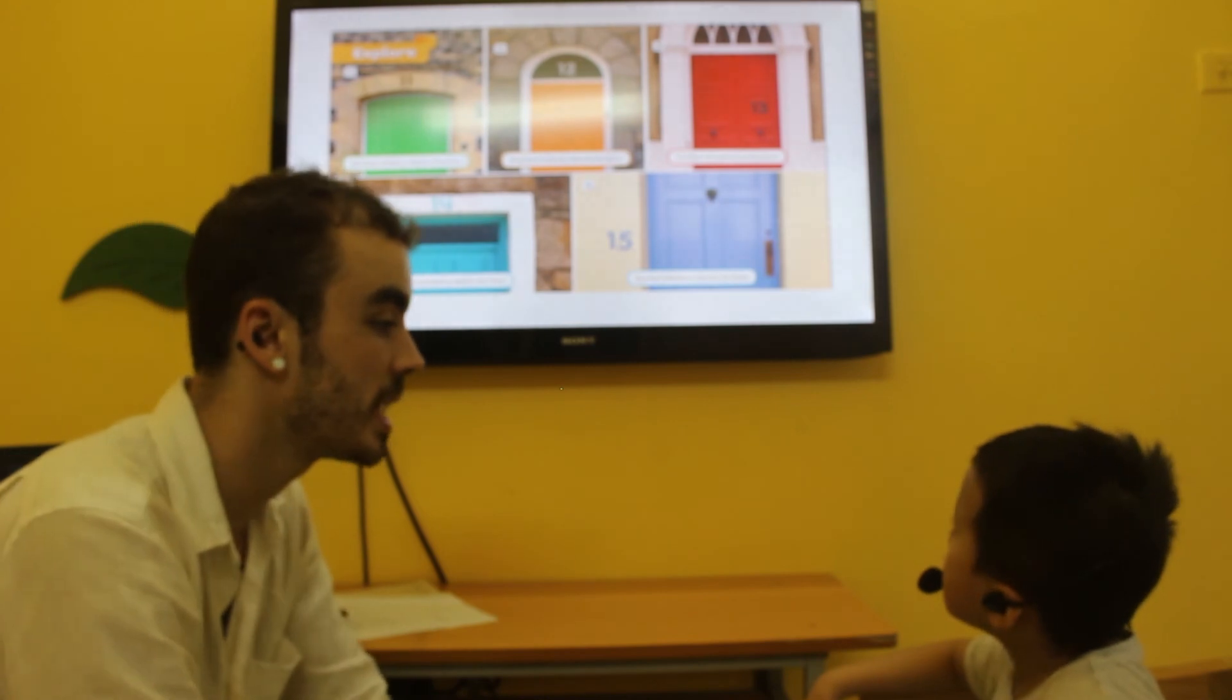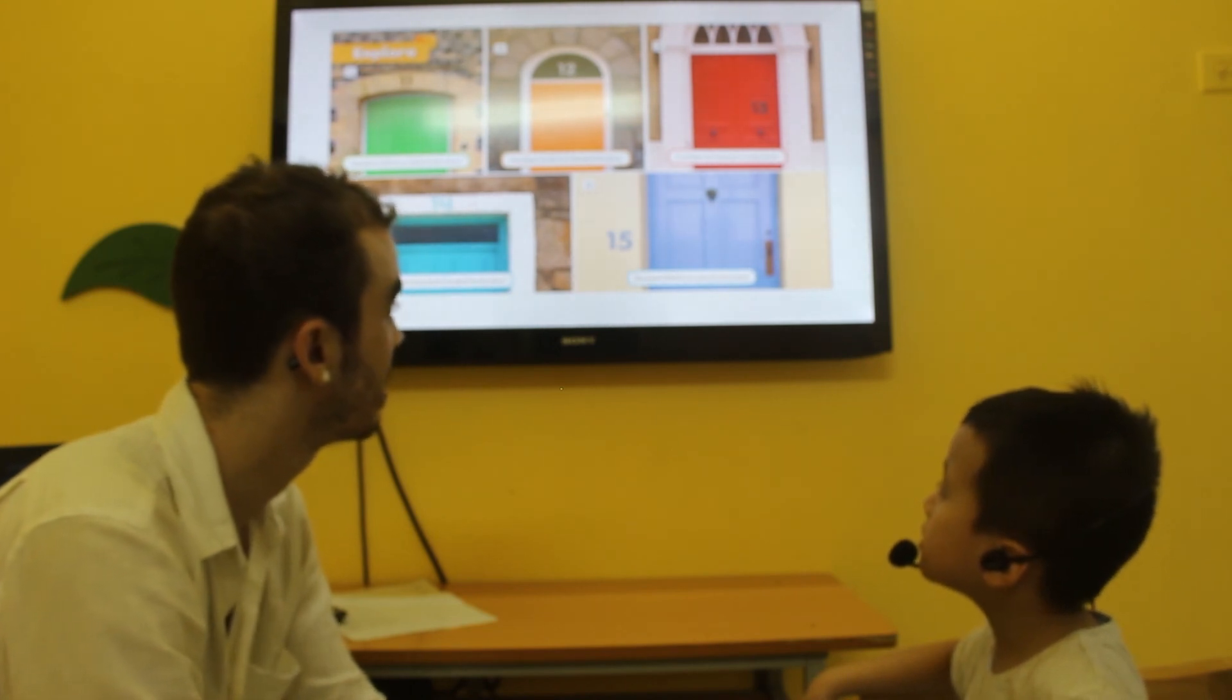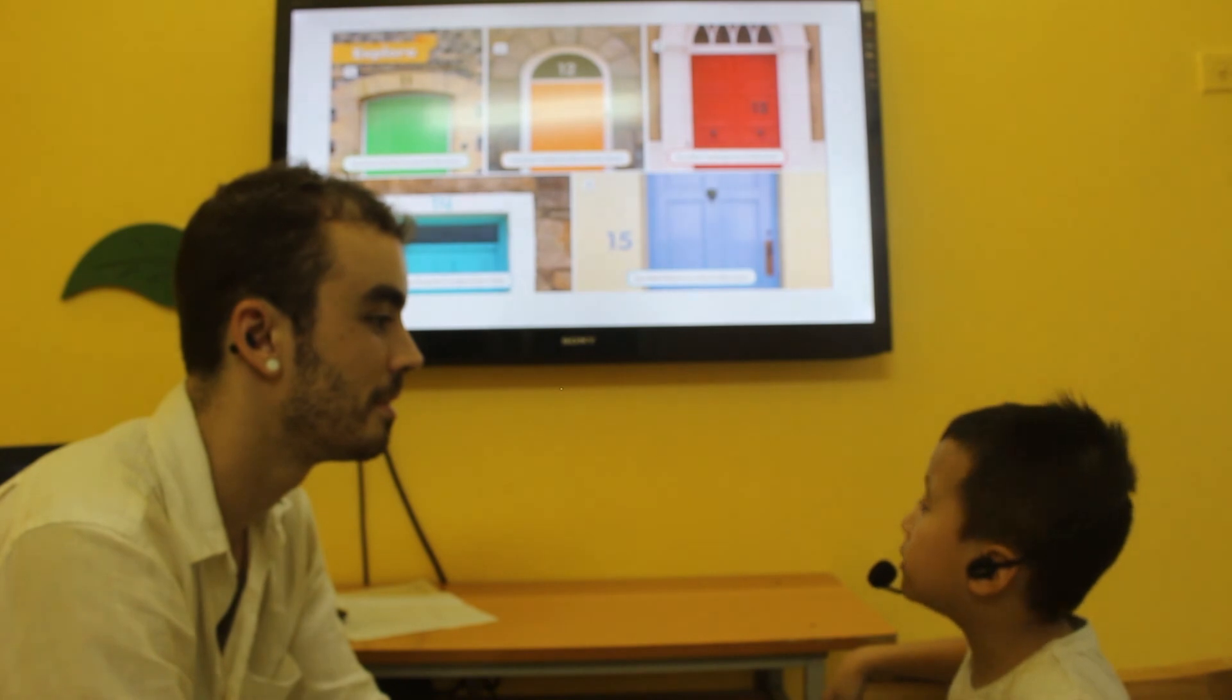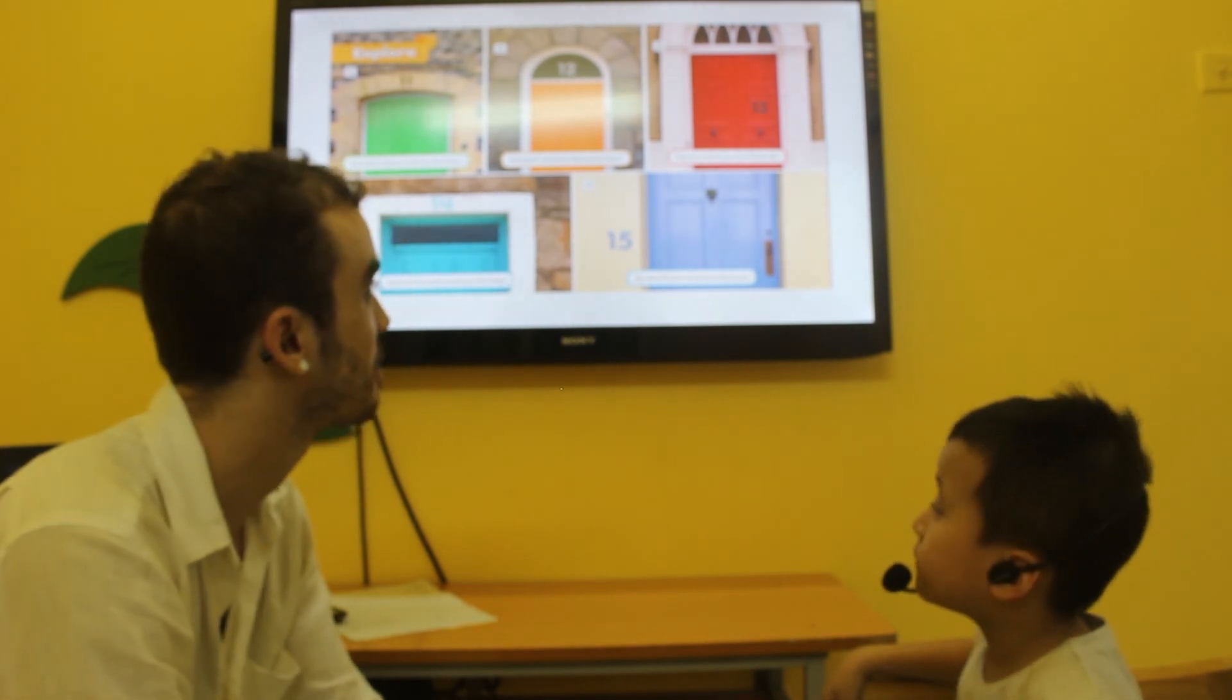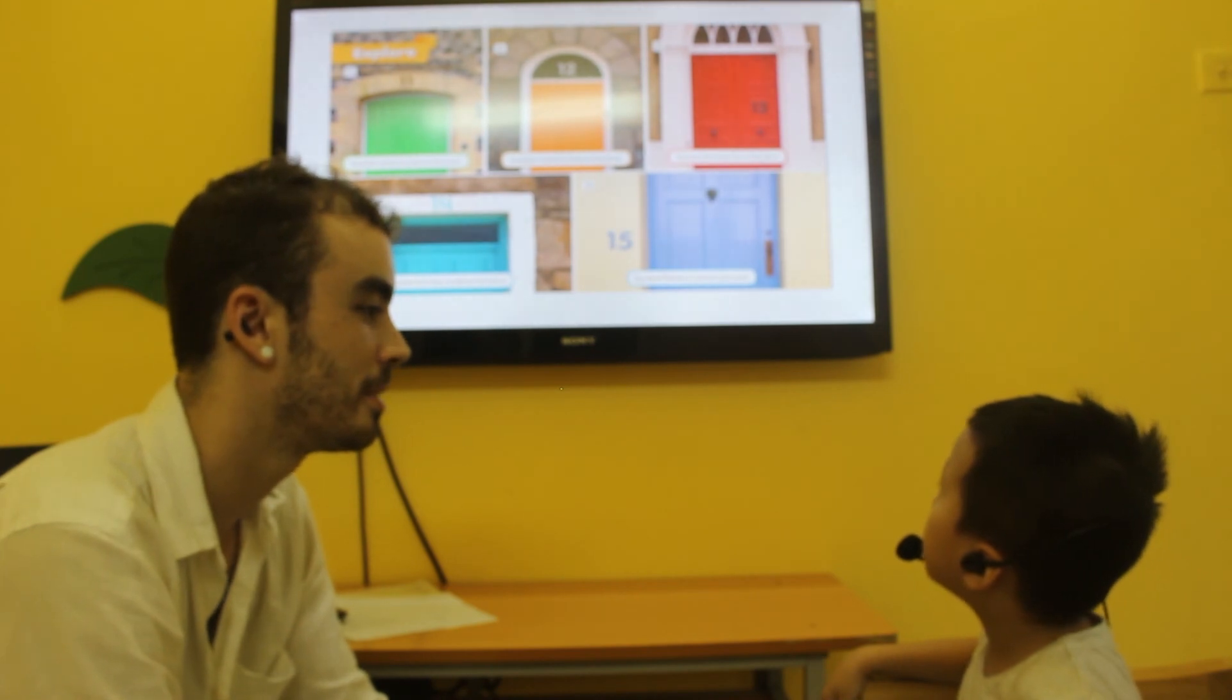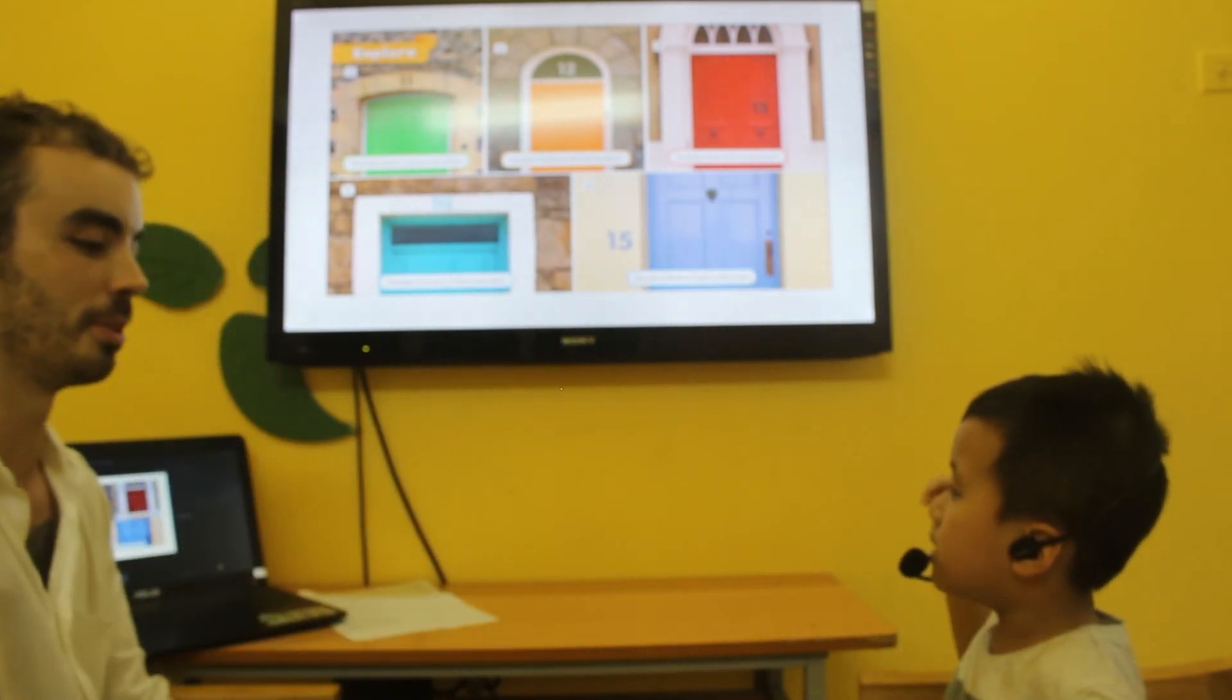Where is the letter fourteen? Fourteen is above the door. Yeah. Where is the letter fifteen? Fifteen is little door. Excellent. Where is the number thirteen? Thirteen is on the door. On the door. Excellent job, honey. Good job, dude. All done.